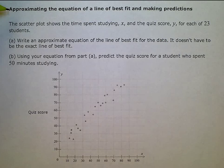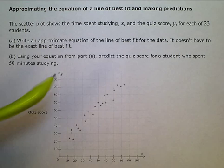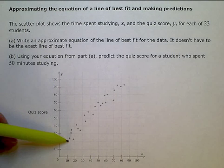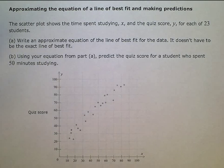Approximating the equation of a line of best fit and making predictions. The scatter plot shows the time spent studying along the x-axis and the quiz score along the y-axis for each of 23 students.